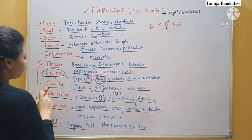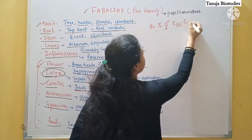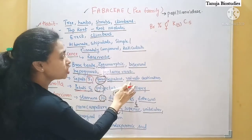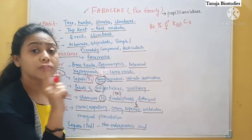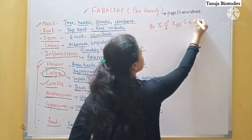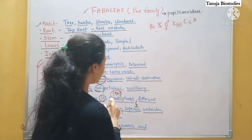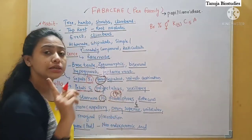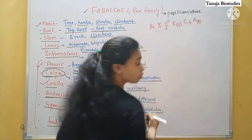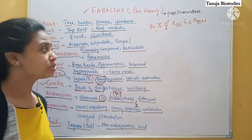Then for corolla — how many petals? Five. Corolla is five, but they are polypetalous so we will not put them in a bracket. The vexillary aestivation we will show in the diagram. For the androecium, stamens are ten — but they are diadelphous, with the 9+1 arrangement. Nine are fused so I will put them in a bracket, plus one separate.